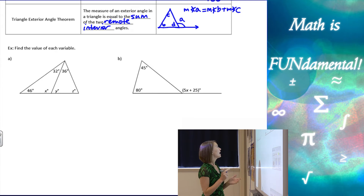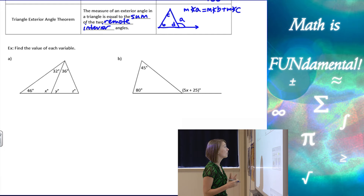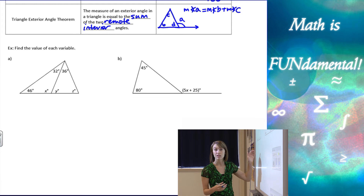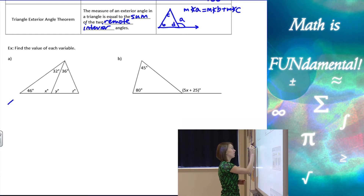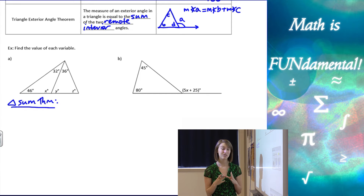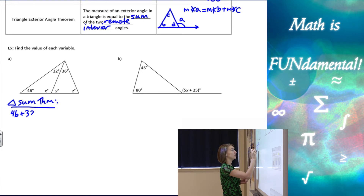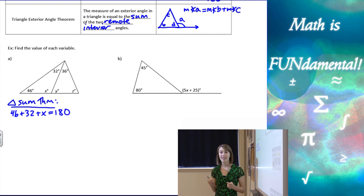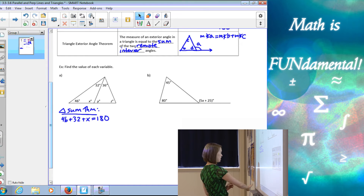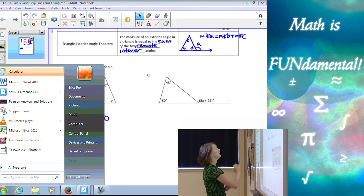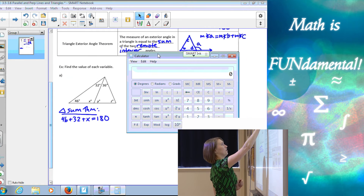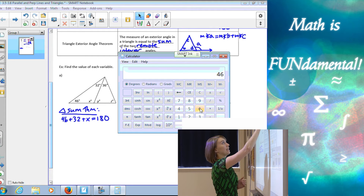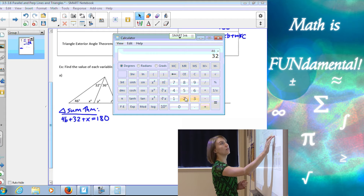Let's do a couple of examples. Example A: find the value of each variable. There are three variables, but let's start with X. If we ignore the other triangle, we already have two of the angles. Using the triangle sum theorem, the angles inside the triangle all add up to 180. So I can write: 46 plus 32 plus X equals 180. Let me grab my calculator — 46 plus 32 gives me 78.